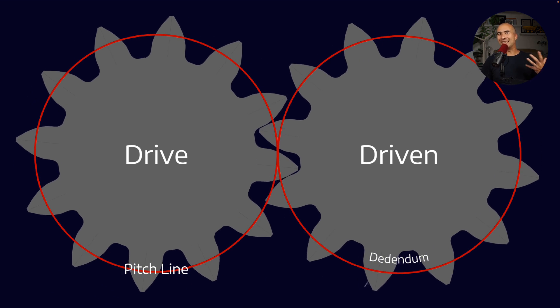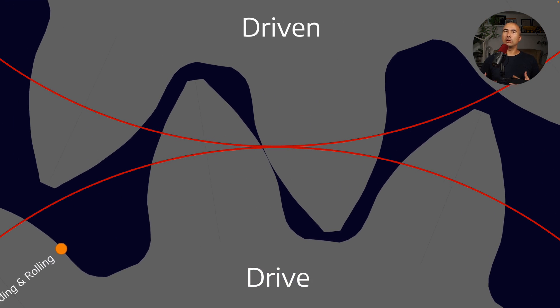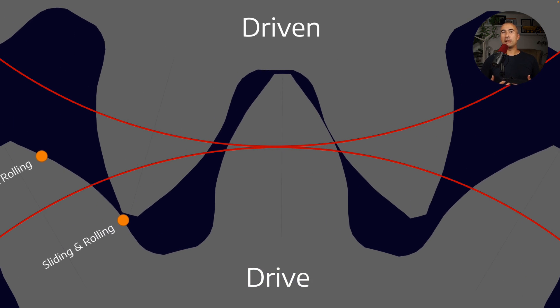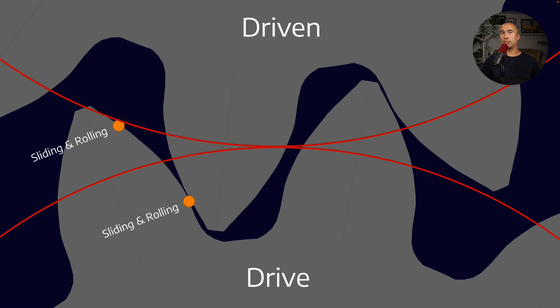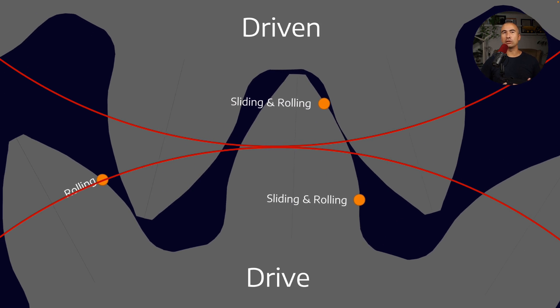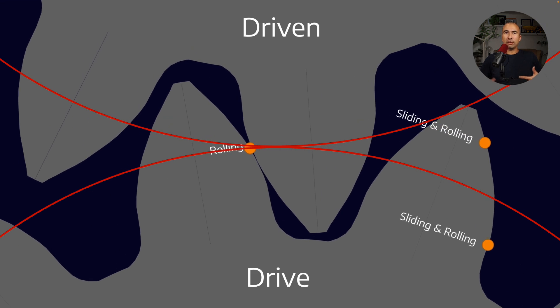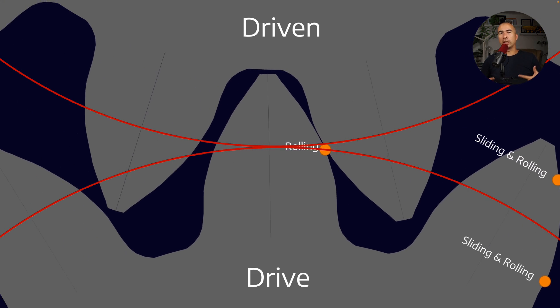Now, what is actually happening at the gear tooth interaction, right? We know that there are two forms of motion. Anywhere above and below the pitch line, we have both a sliding and a rolling contact. And you can see that in the interaction of the surfaces. Whereas at the pitch line, the pitch line is defined by the fact that we only have rolling motion.